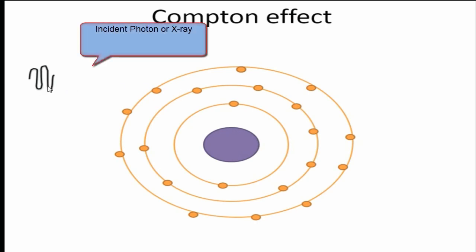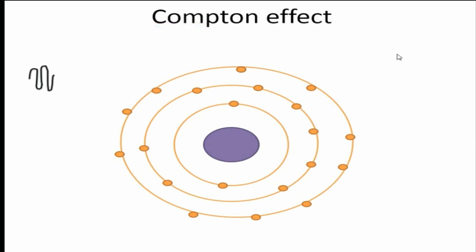You will see here that this is a photon which we call the incident photon, and this is my atom. The center is the nucleus, which consists of protons and neutrons, and the outer shell consists of electrons — this is K shell, L shell, and M shell.